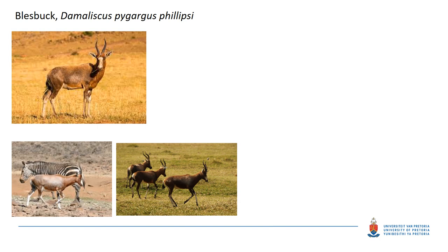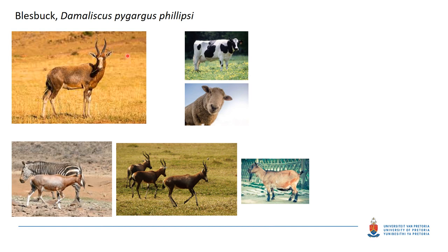For the first example, we're going to look at the blessbuck, a medium-sized African antelope. Let's say you are handed an EDTA sample from a blessbuck and you're standing in front of your hematology analyzer. What species setting are you going to choose? In terms of domestic ruminants, you have the choice of a cow, a sheep, or a goat. You might think a blessbuck looks similar to a little goat, so you'd go for the goat setting.